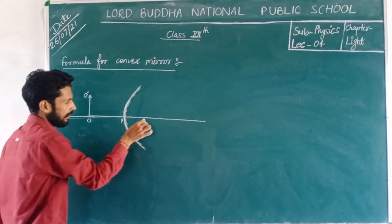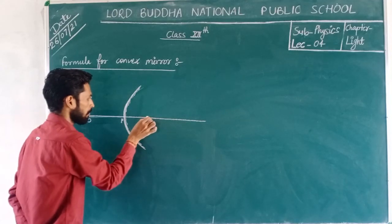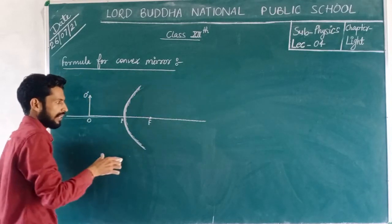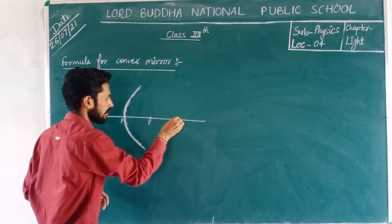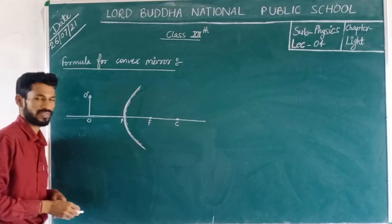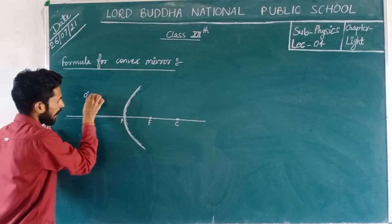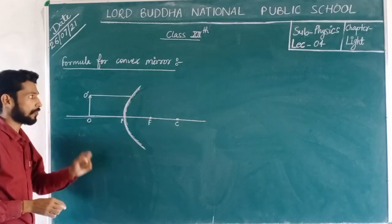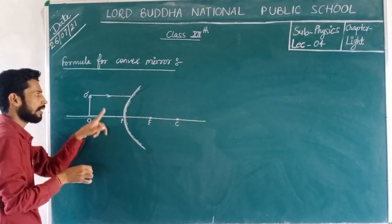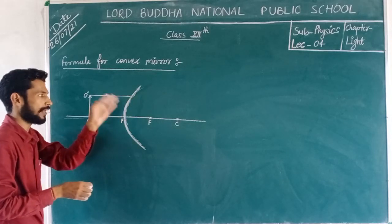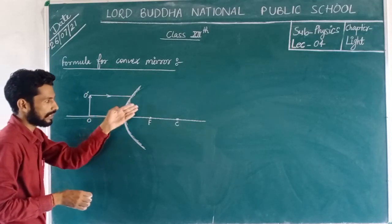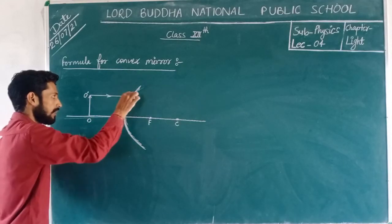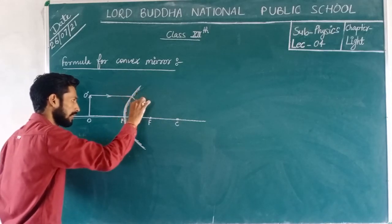Here is the focus of the mirror, F. At double that distance there will be the center of curvature, C. If any ray of light goes parallel to the principal axis, then it will be reflected towards the focus. It will appear to come from the focus — it diverges away from focus.